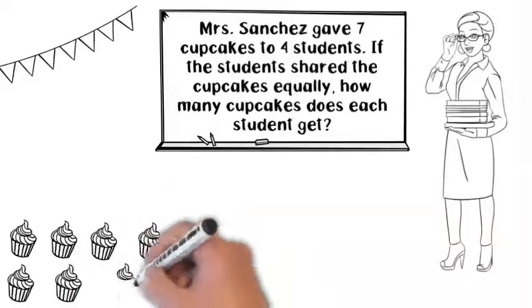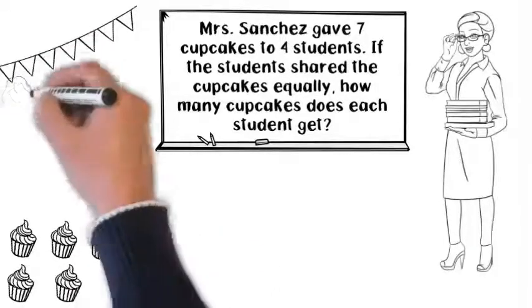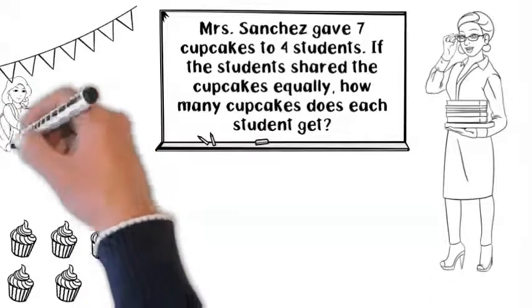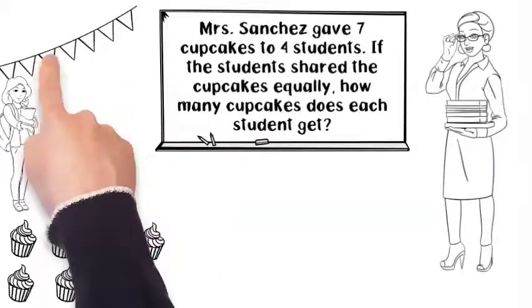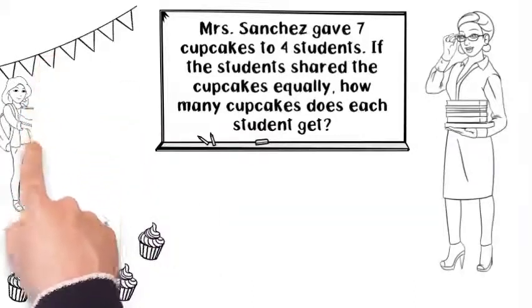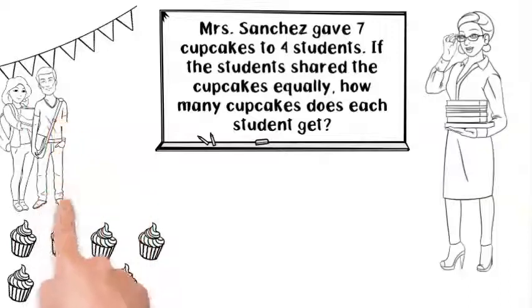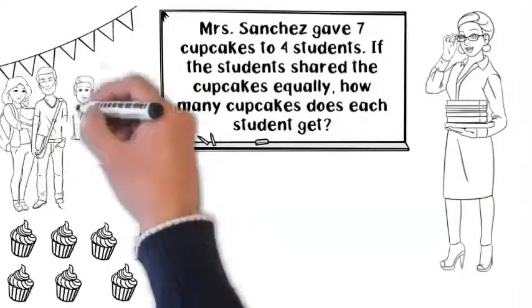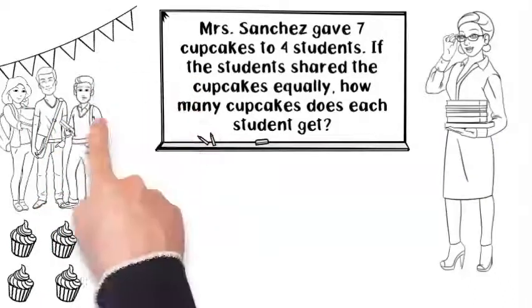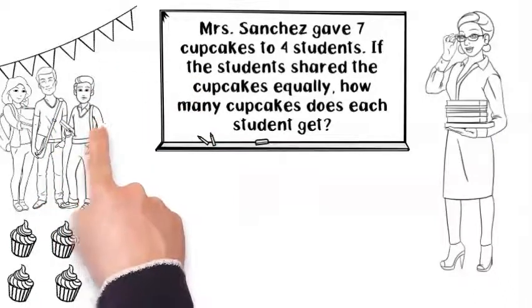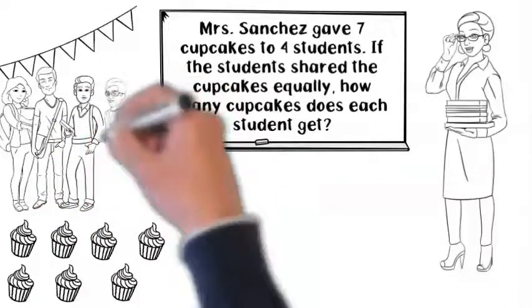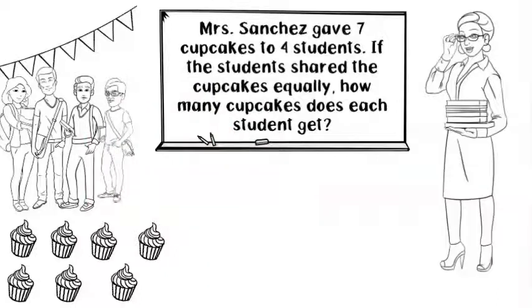Think about it this way. You want to start with what you're dividing up. Are you splitting up the 4 students and giving each cupcake a fraction of a student? Goodness, no! No one would ever invite you to parties anymore. You're splitting up the cupcakes and giving fractions of the cupcake to each student.